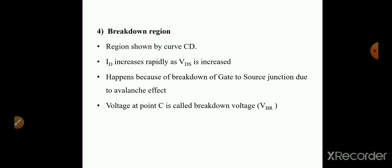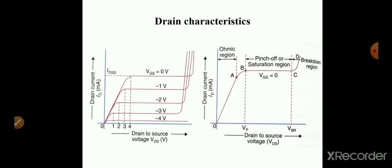The next region is the breakdown region, shown by curve CD. In this region, drain current increases rapidly as the drain-source voltage is increased. This happens because of breakdown of the gate-to-source junction due to the avalanche effect. The voltage at point C is called the breakdown voltage VBR. Point B is represented by pinch-off voltage, and point C is represented by breakdown voltage VBR.